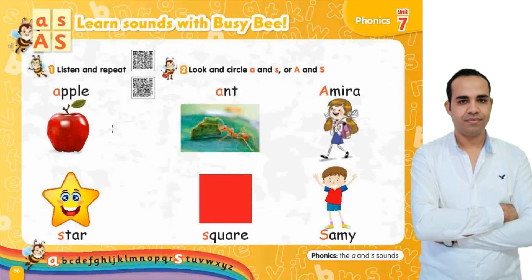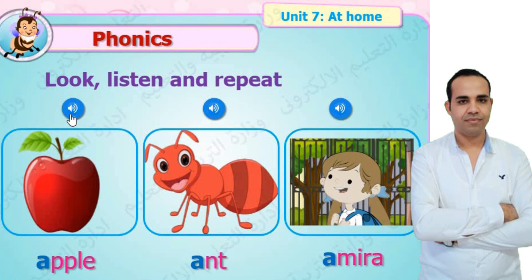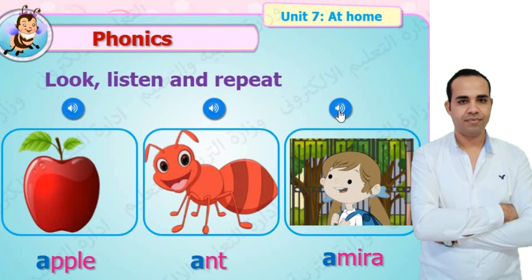Learn sounds with Busy People — we'll learn the words with us. We have the alphabet. A — apple, ant, Amira.